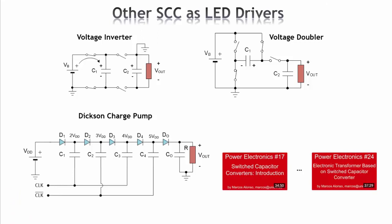Here are other switch capacitor converters that can be more interesting. For example, the voltage inverter, which produces an output voltage close to the input voltage but with a negative sign. We can also implement a voltage doubler to obtain an output voltage close to double the input voltage. Another common switch capacitor converter is the Dixon charge pump, which is very useful to obtain high output voltages — something close to five times the input voltage. For more on this topic, I recommend Power Electronics videos 17 to 24 on my YouTube channel, which deal with switch capacitor converters.